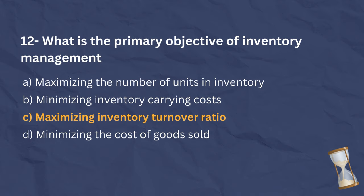The answer to question 12 is C. Inventory management aims to maximize the inventory turnover ratio. This ratio measures how efficiently a company utilizes its inventory by calculating the number of times inventory is sold and replaced within a given period. A higher inventory turnover ratio indicates that inventory is being sold quickly, which is generally desirable as it minimizes inventory holding costs.